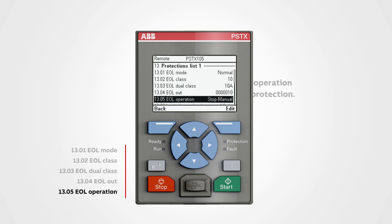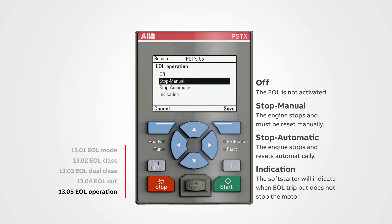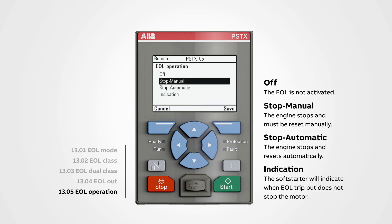EOL operation: set the operation of this protection. Off means EOL is not activated. Stop manual means the motor stops and must be reset manually. Stop automatic means the motor stops and resets automatically. Indication means the soft starter will indicate an EOL trip but does not stop the motor.